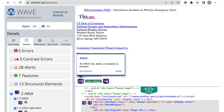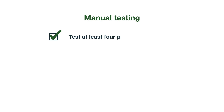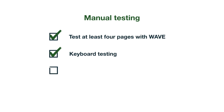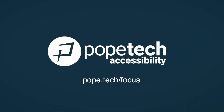Next, we would need to use WAVE to go through the rest of the pages. Using WAVE to go through at least 4 pages is a great start to manual testing. But manual testing also includes keyboard testing, checking zoom levels, and assistive technology testing with a screen reader, for example. Starting with WAVE gives us a good feel for the website — it helps simplify manual testing and lets us know areas we should focus on in our keyboard and screen reader testing. You're ready to use the WAVE extension to start manually testing your own website.